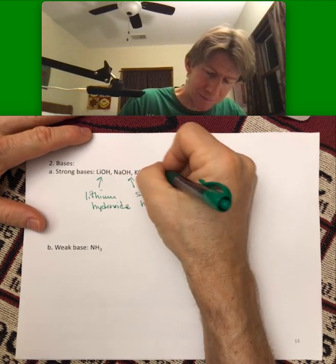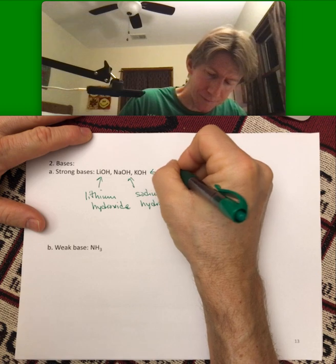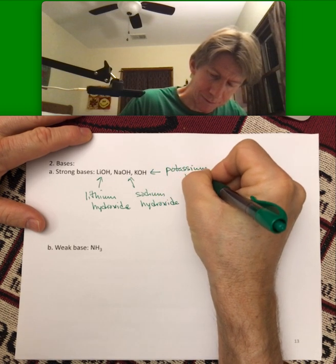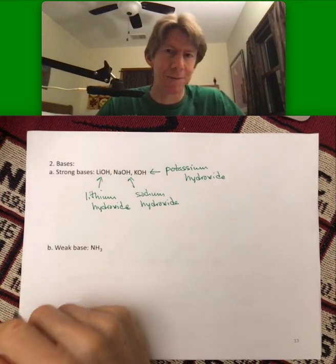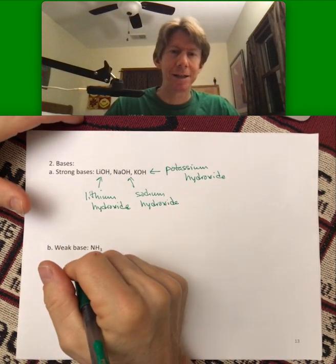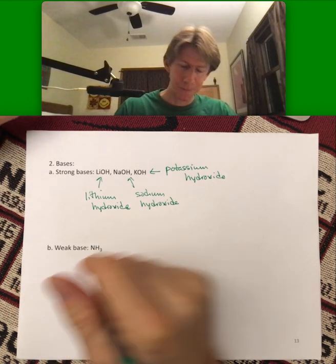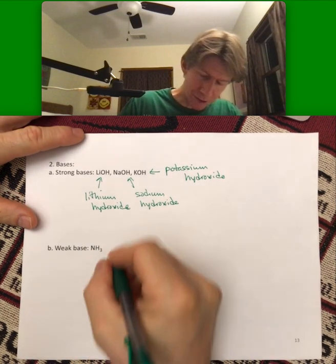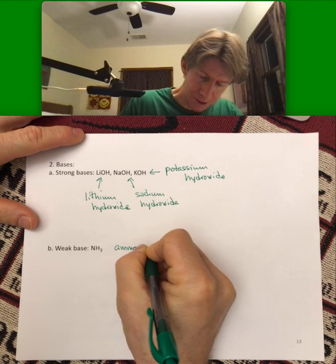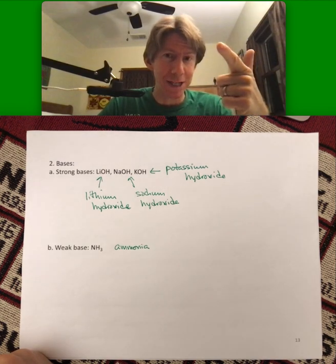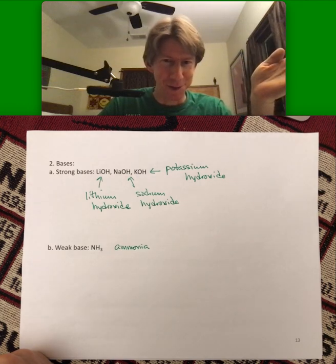And again, there will be many more bases, and there actually are a number of other strong bases as well. But for this course, these are the ones you have to know. And if any other strong bases come into play, I'll tell you about them. Weak base: ammonia. Amino acids are really interesting because they have a weak base in them and a weak acid. But we'll save that for another course.